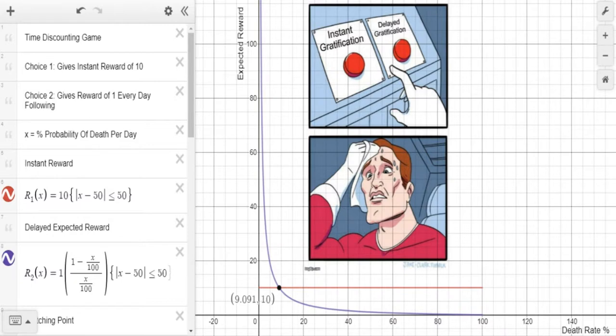So right here, we have what I call the time discounting game. You have two buttons. You can take the instant gratification, this gives you an instant reward of 10 you can have now, or you can have delayed gratification. And so this gives a reward of one every following day. So this means that tomorrow you get a reward of one, then the next day you get a one, and then every day following, you will get one as a reward.